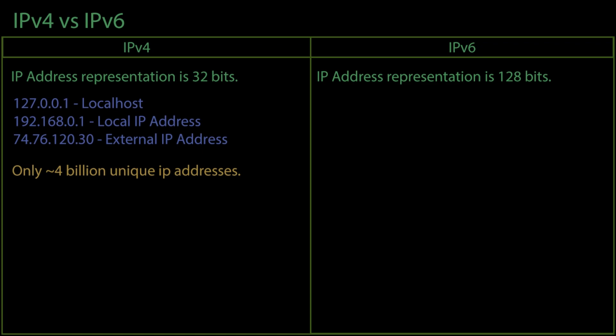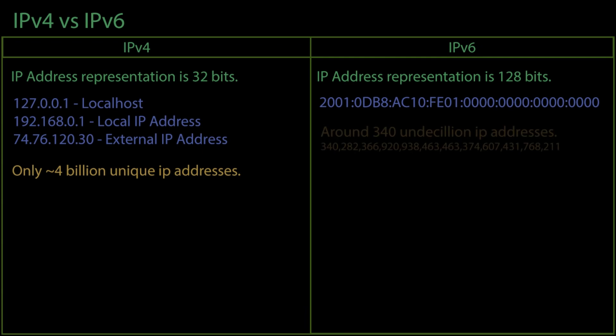Version 6 was supposed to be a solution to this problem, but it does not seem to be widely implemented yet. In version 6, the IP address is represented by 128 bits. There are 8 sections to an IP address in version 6. Each section contains 2 bytes and is separated by a colon and represented in hexadecimal. Here's an example of what an IP address might look like in version 6. Version 6 allows for more IP addresses than the world could probably ever need — it allows for approximately 340 undecillion unique IP addresses.